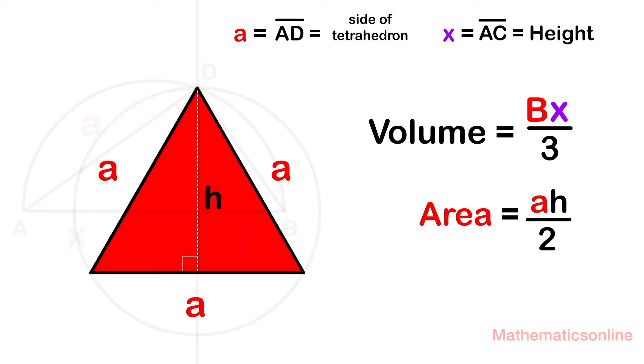So the base is a, and notice that the height divides the base in half, so we have a divided by 2. Notice that we have created a right triangle, and by the Pythagorean theorem,